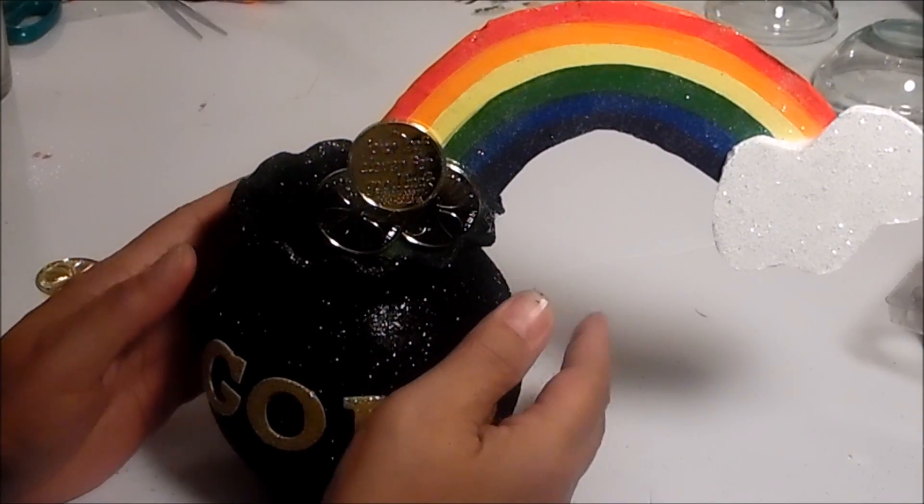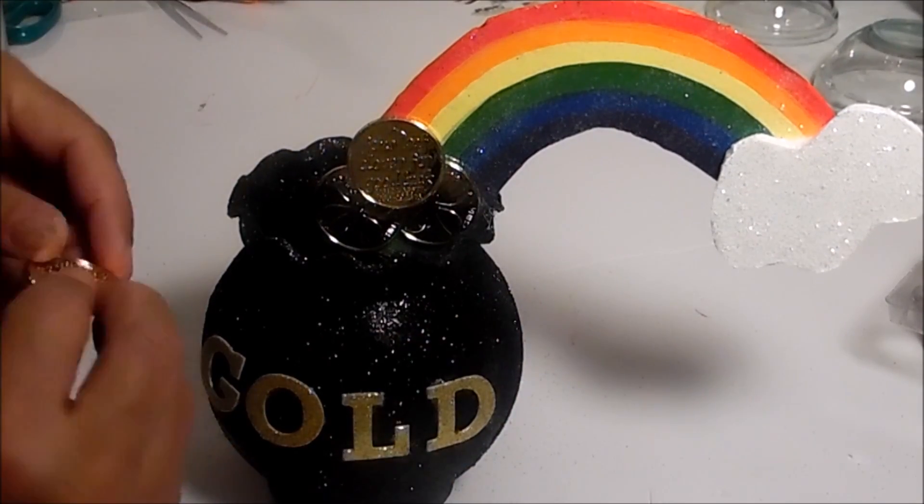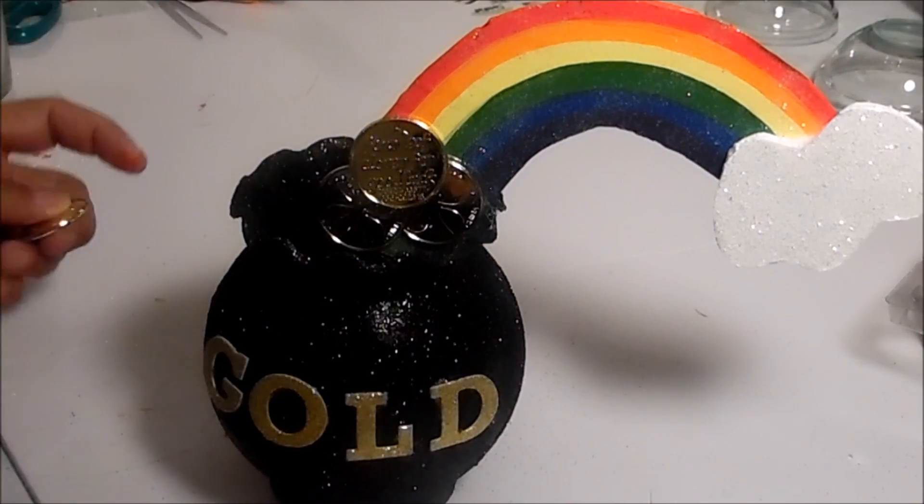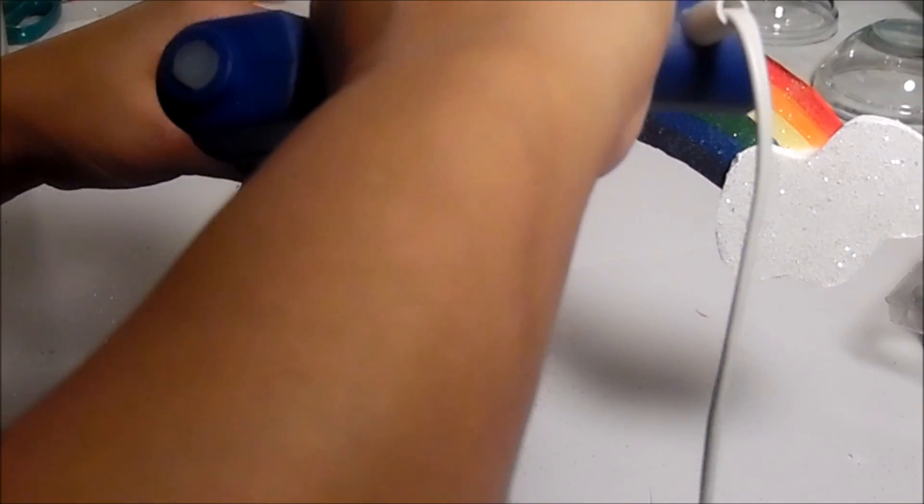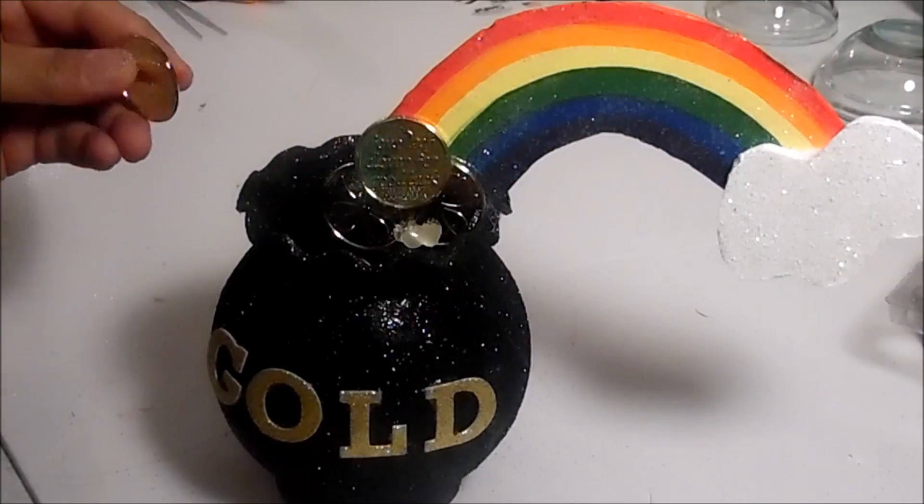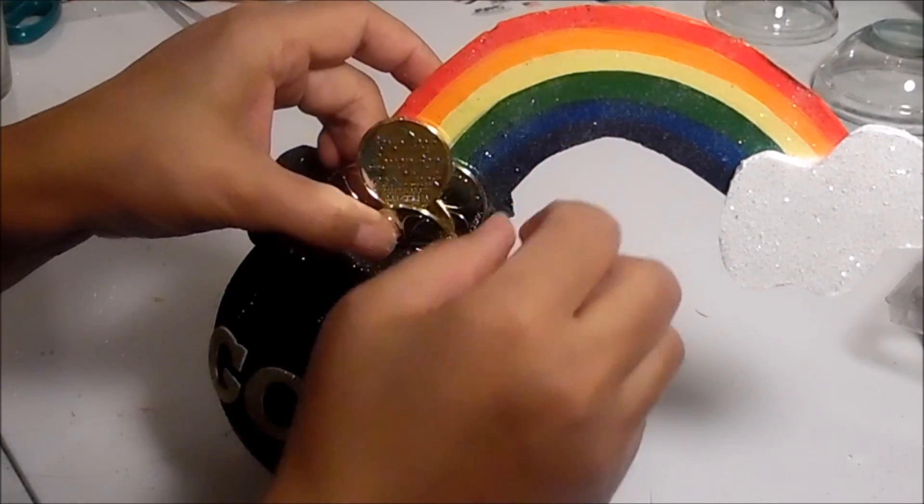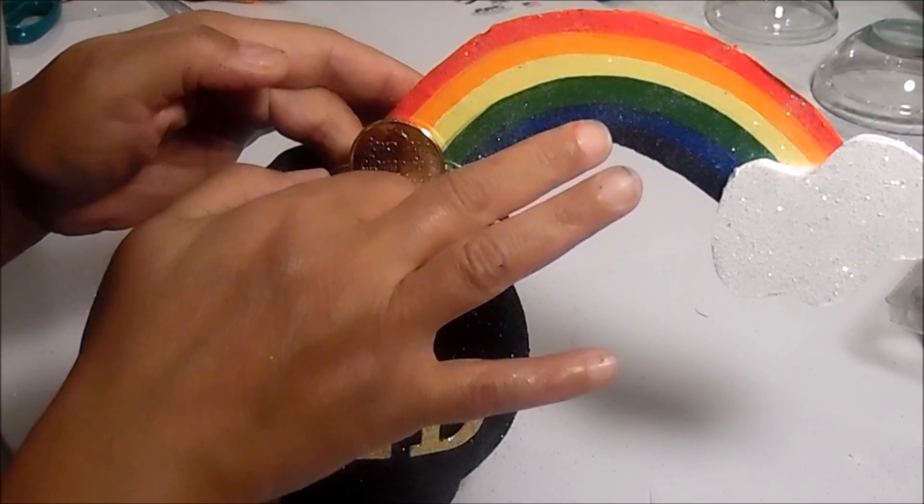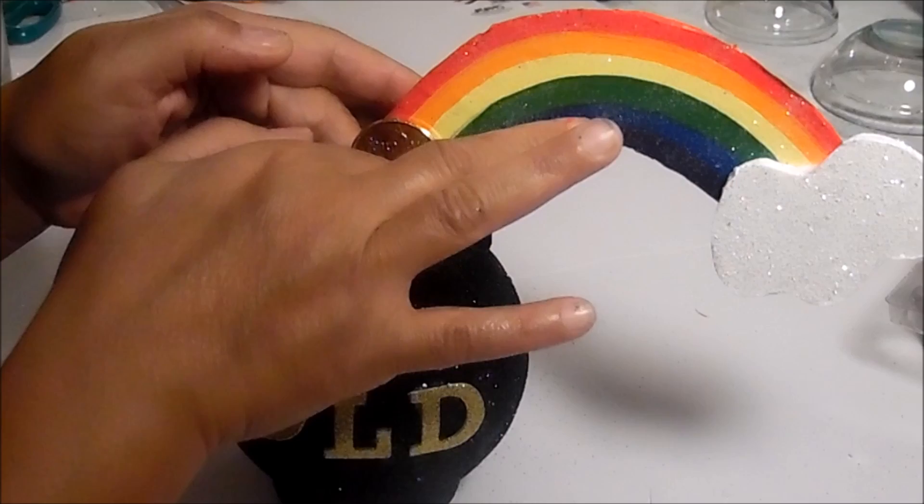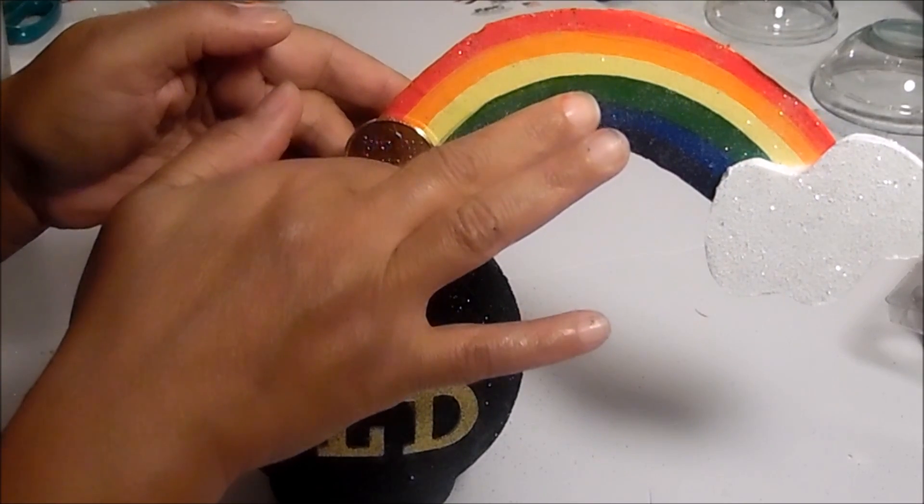My camera died, but I'm back now, so let's just finish. Those are pretty set. I think I'm going to add one more coin right below there. And just hold it until it sets. And you can use a low temperature heat gun and it'll dry faster.